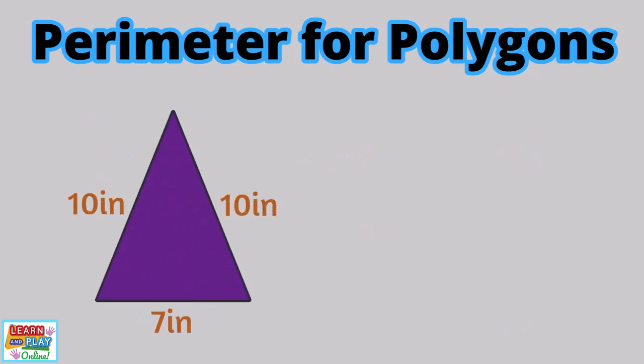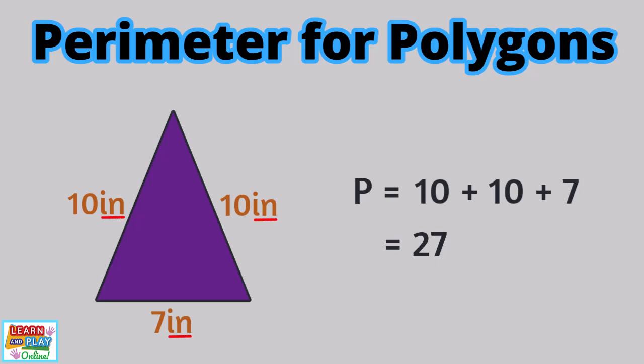Let's find the perimeter of this triangle. As you can see, it has three sides. Two sides are 10 inches long and one side is only 7 inches in length. If we add all the sides together — 10 plus 10 plus 7 — it would equal 27. But we can't just write the number 27; we must add the unit of measurement, which is inches in this case. So the perimeter of this triangle is 27 inches.